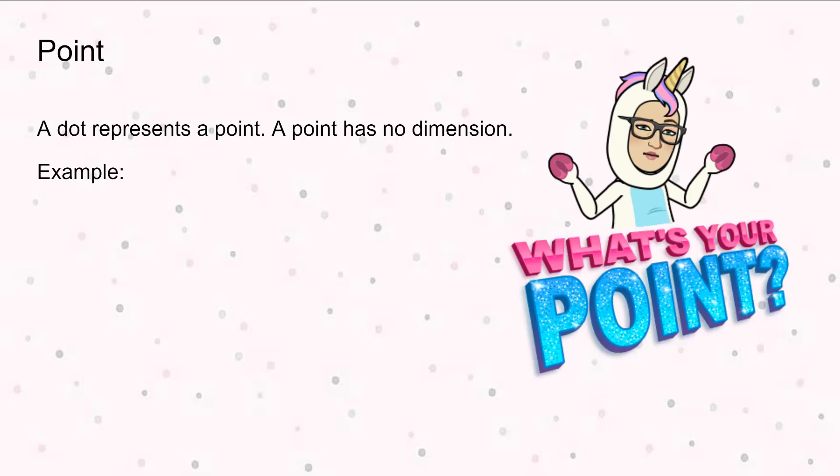A dot represents a point. A point has no dimension. And here is an example of point A.